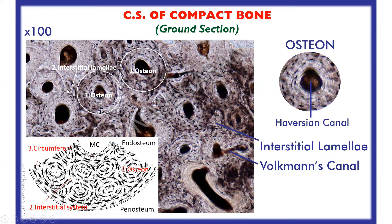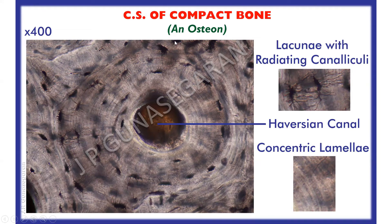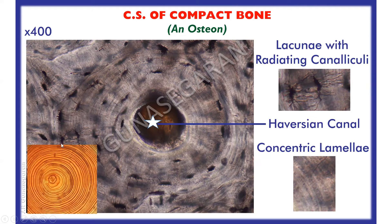The third component is the circumferential system. You have an inner circumferential system and an outer circumferential system — the inner is deep to the endosteum, and the outer is deep to the periosteum. This is a higher magnification of an osteon, traversed by a central canal known as the Haversian canal. The Haversian canal is surrounded by concentric lamellae of bone, resembling the growth rings of a trunk of a tree.